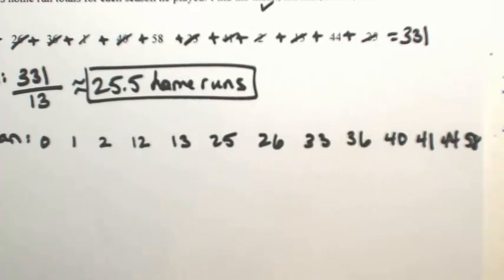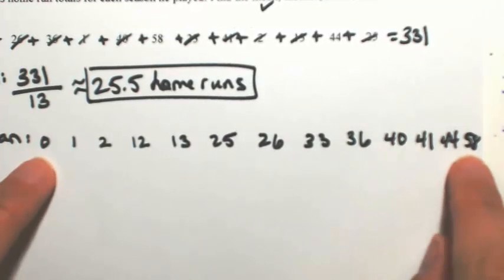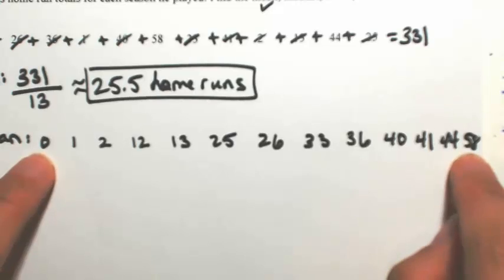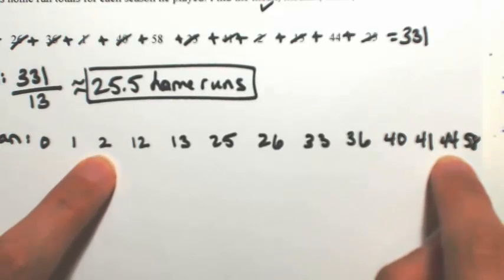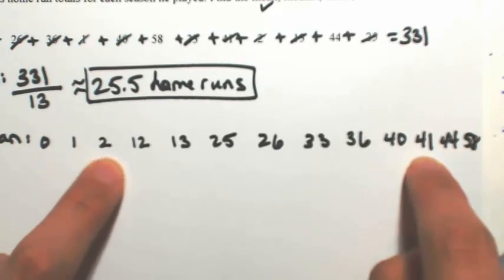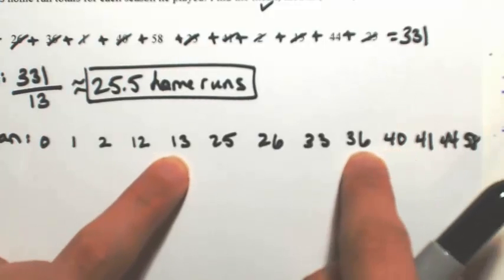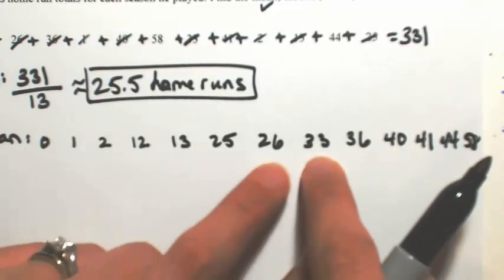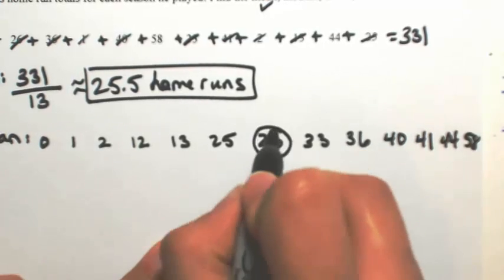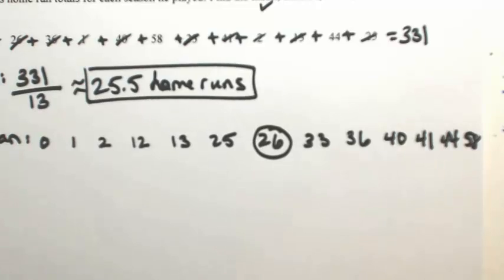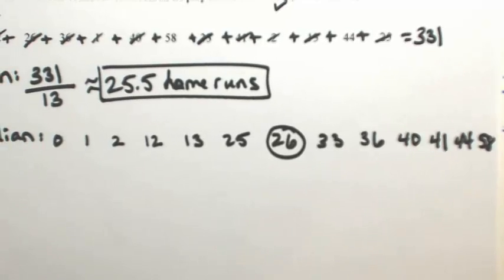So what we're going to do is find the middle number. One way to do this is to start on the outsides and work your way in. Moving one in from each side repeatedly — so 26 is right in the middle. So the median is 26.